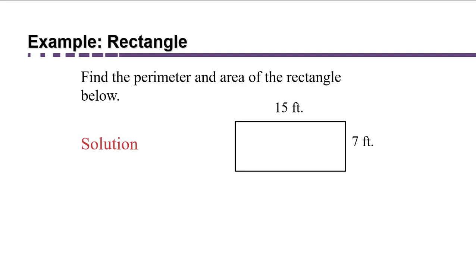So in this example, we're going to find both the perimeter and the area of the rectangle that we're given, which has dimensions 15 feet by 7 feet. Let's find the perimeter first. We know that perimeter is 2 times the length plus 2 times the width, which in this case would be 2 times 15 plus 2 times 7, or 44 feet. Remember, perimeter is a measure of length, and we use linear units, so it's just feet.